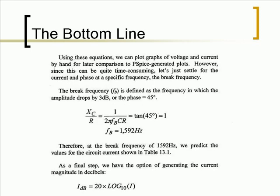Using these three equations, we can plot graphs of voltage and current by hand for later comparison to our waveform-generated plots. Since this can be quite time-consuming, let's settle for the current and phase at a specific frequency — the break frequency. The break frequency, Fb, is determined as the frequency at which the amplitude drops by 3 dB, or the phase reaches 45 degrees. Using the equation, we find that the break frequency is 1592 Hz. As a final step, we have the option of generating the circuit magnitude in decibels using the formula shown below.